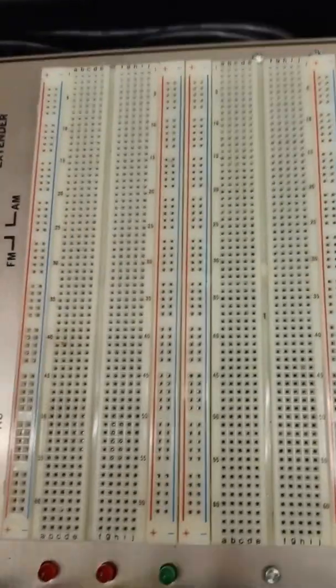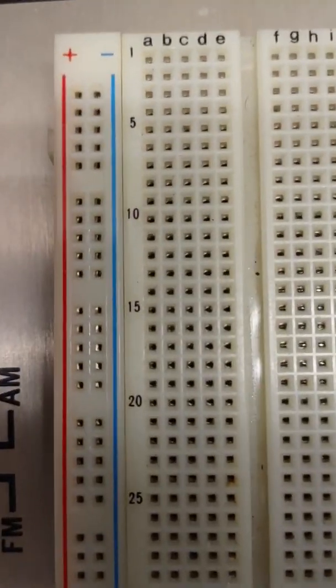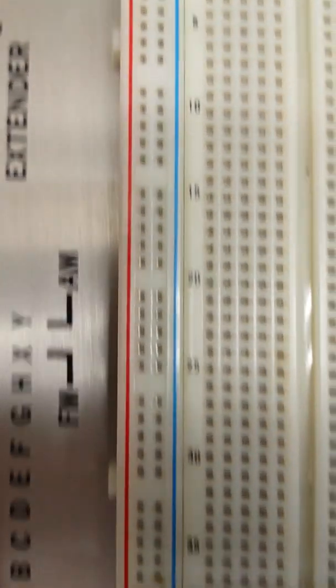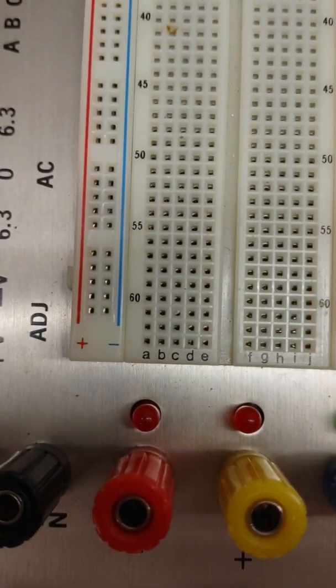Hello and this is a breadboard. As you can see here we have two power rails, red and blue, and these extend for the whole length of the breadboard.